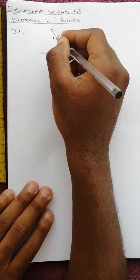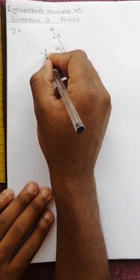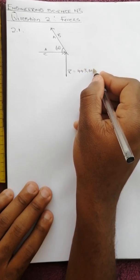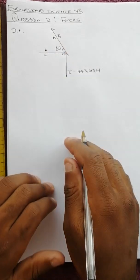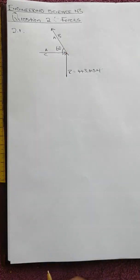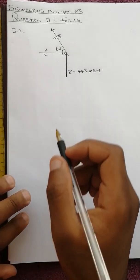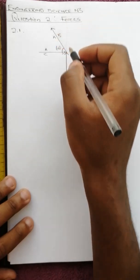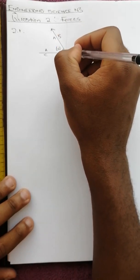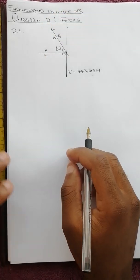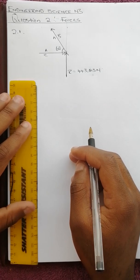So this is AB, this is AC, and this is R which is 443.013 newtons. To solve this we've got to form a triangle of forces. We'll use the parallelogram rule or the triangle rule. To do that we're going to remove this force along its line of action and complete the parallelogram.